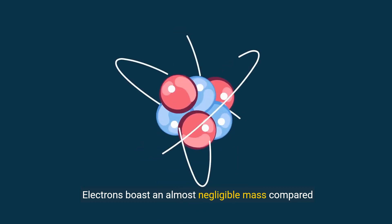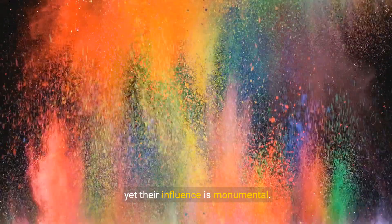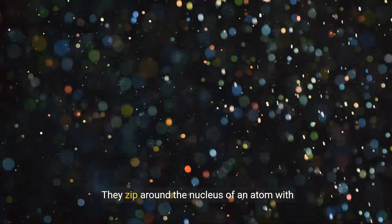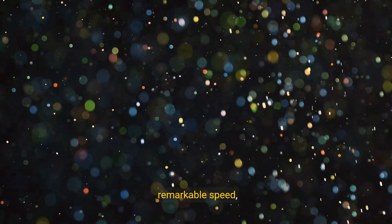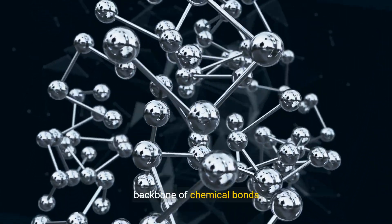Electrons boast an almost negligible mass compared to protons and neutrons, yet their influence is monumental. They zip around the nucleus of an atom with remarkable speed, creating electric currents and forming the backbone of chemical bonds.